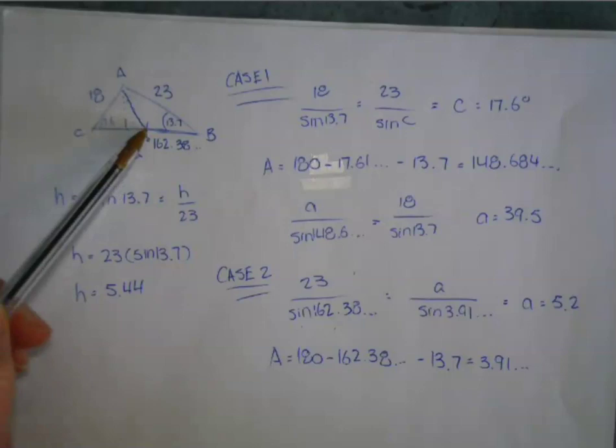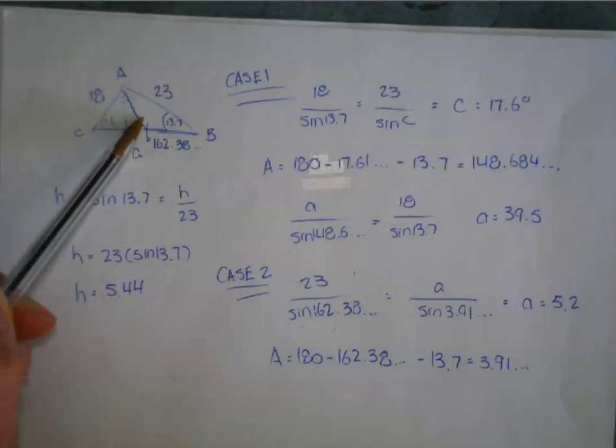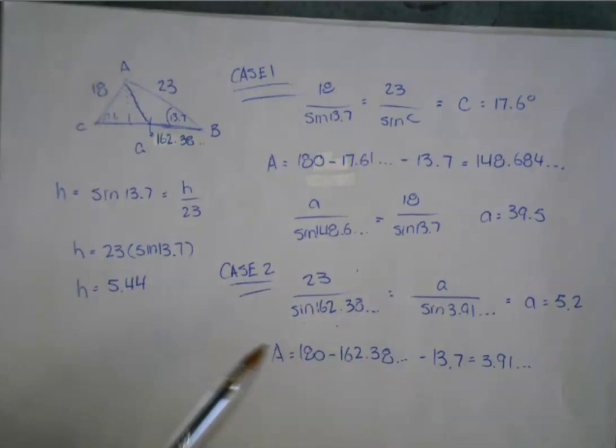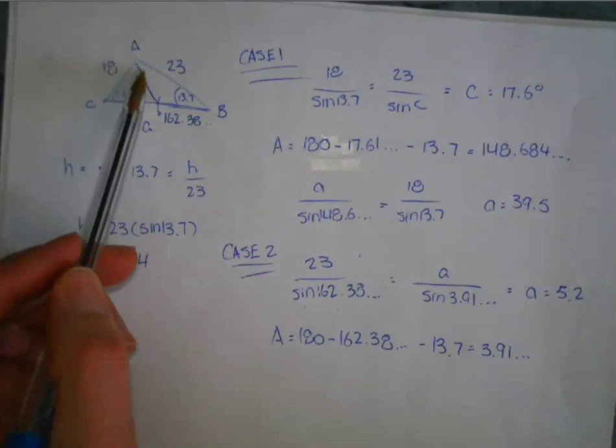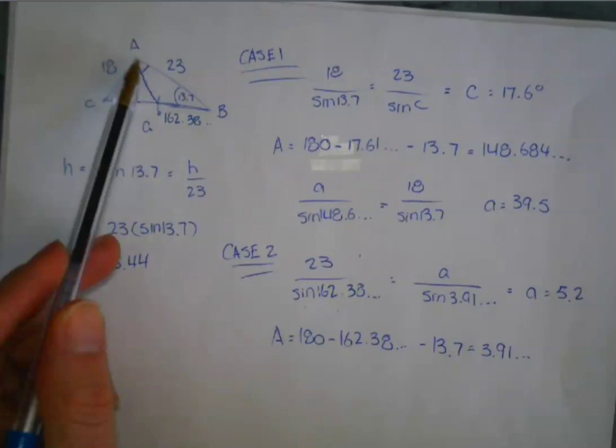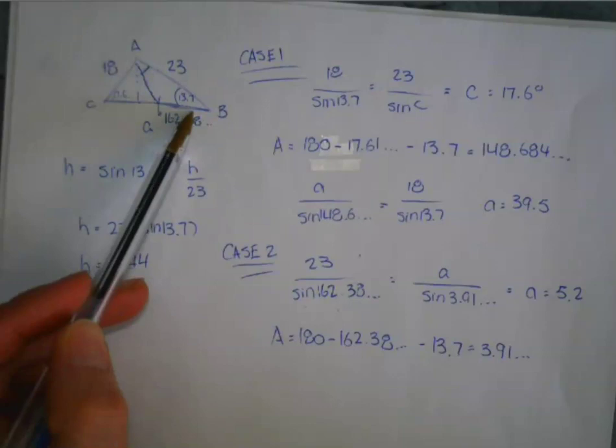So it's going to be 180 minus 17.6, which gives me 162.38 as my angle. Again, I did not round that off. And then I need to solve for basically this little angle up here. So I did that by doing, sorry, I want to solve for this angle, because I'm going to be trying to solve for this side here, the little a side.